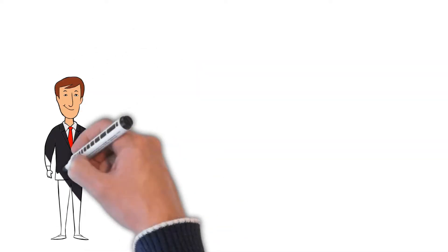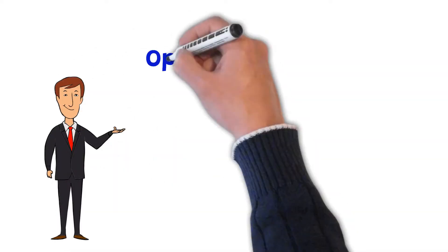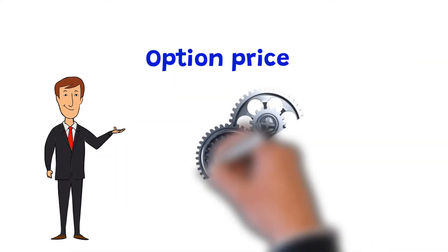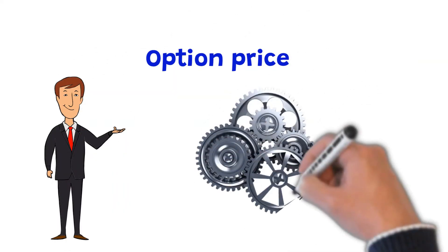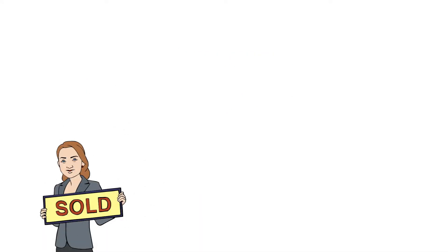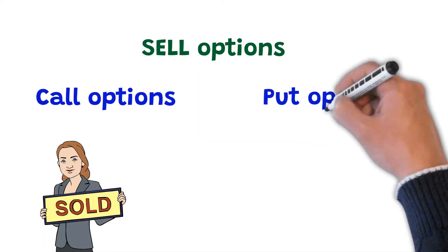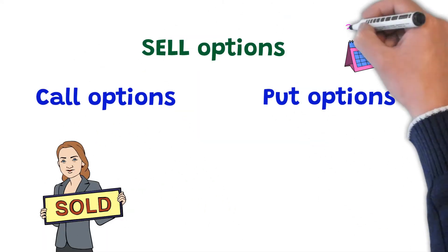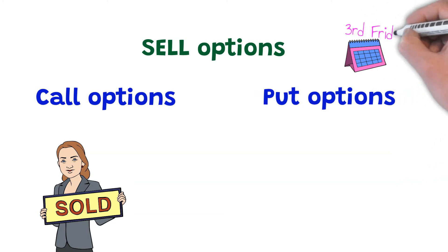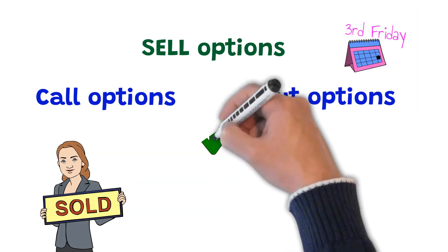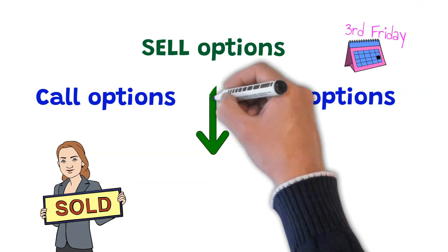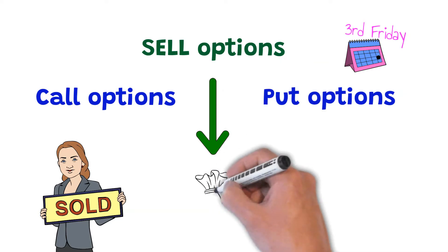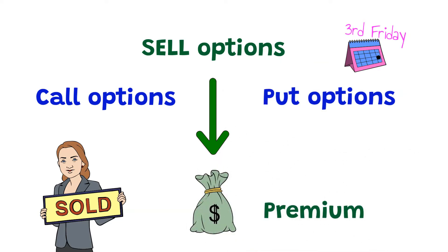In this video, we will explain the different components that option prices consist of. In the Investment Club Network, we sell call options and put options, mainly the monthly ones, which expire the third Friday of every month at 4 pm New York time. What is behind the selling price of these options, also known as premium?